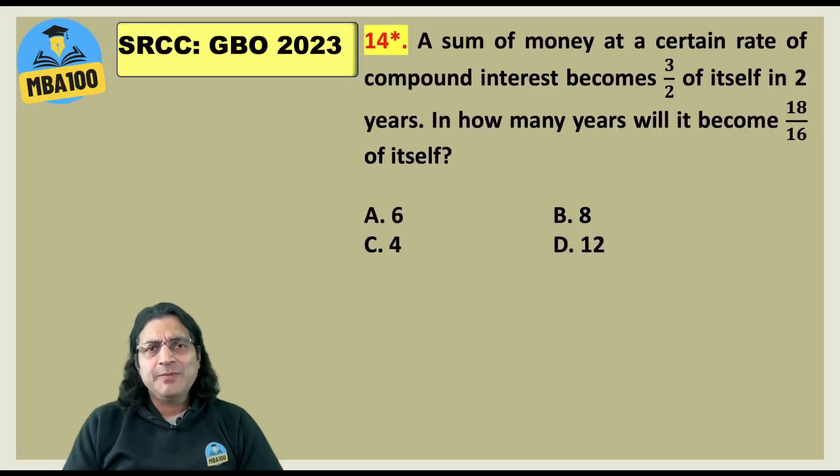Another question where we believe there was a typo. Will it become 18 by 16? The actual question should have been 81 by 16 and then the answer would be 8. 2 into 4 is 8. But here they had put 18 by 16 to the best of memory. Please do let us know in comments if you think that no. They had put 81 by 16. Anyway we would come to know once the response sheets are out.